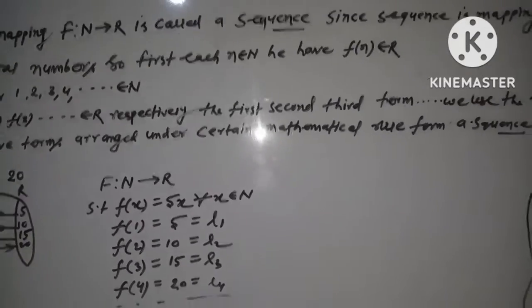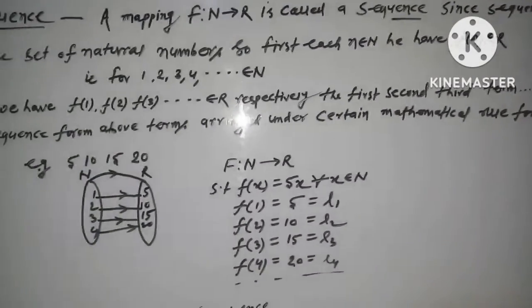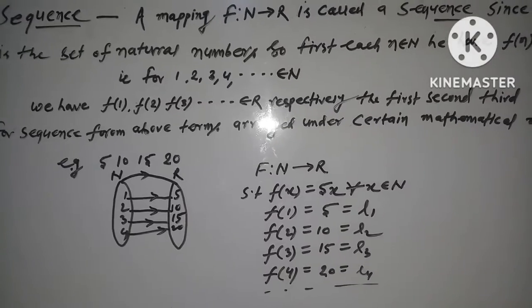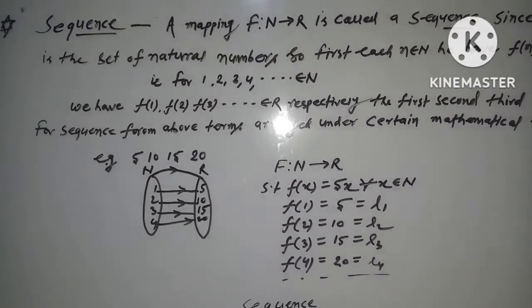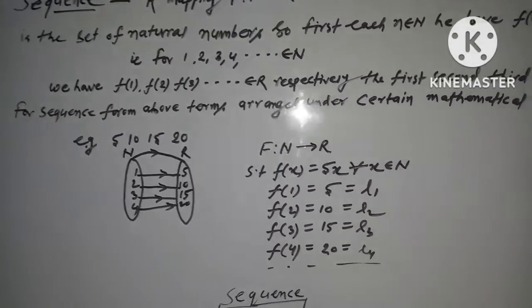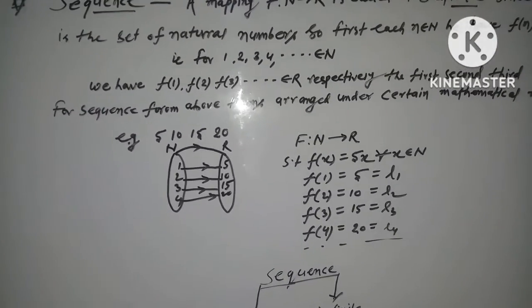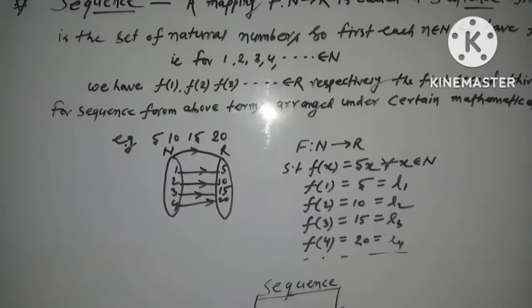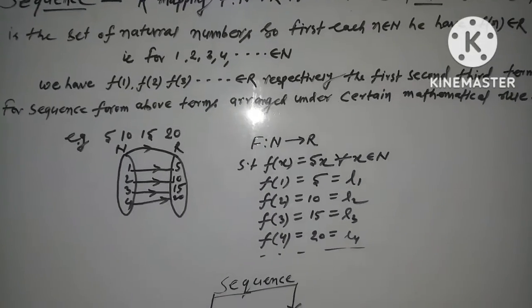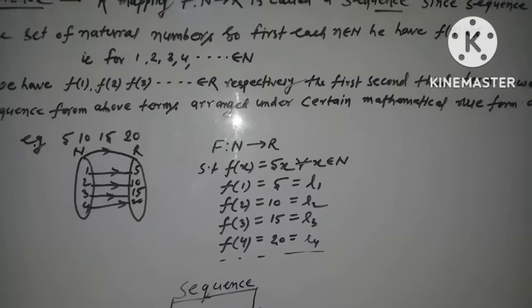So that is F(1), F(2), F(3), F(4) dot dot belongs to real number. Natural number belongs to natural number. We have F equal to F1, F2, F3 dot dot dot belongs to real number.